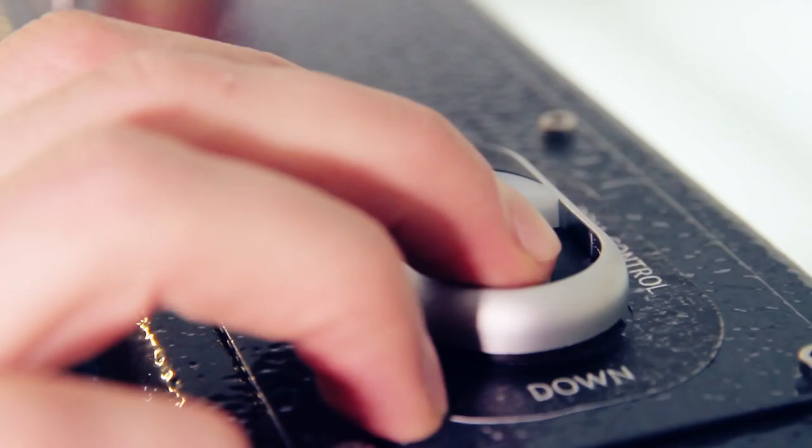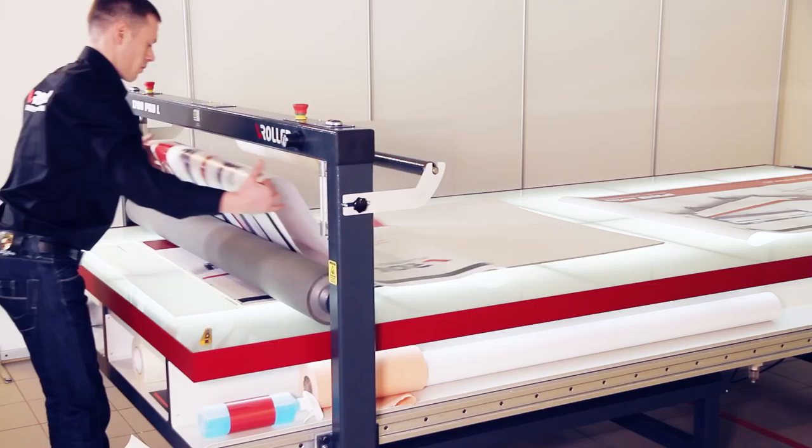Fear not, for the V-Roller Pro Series is here to lend a helping hand. This flatbed laminator produced in Estonia focuses precisely on speed, but also on high quality.